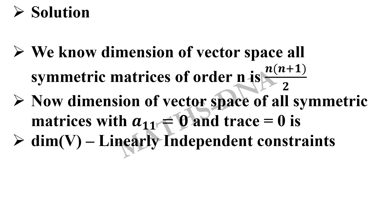One that is A11 equals to 0 and one can be found from trace of A equals to 0. This gives us n(n+1) divided by 2 minus 2. These two are linearly independent constraints.